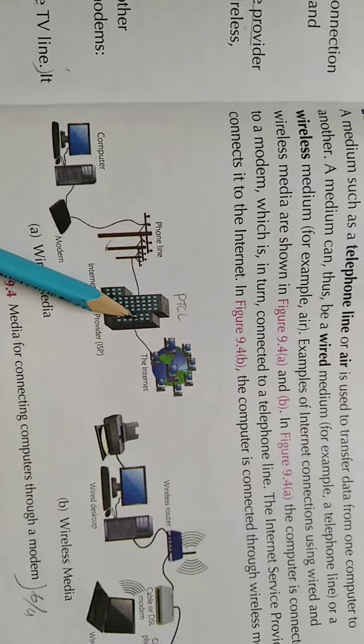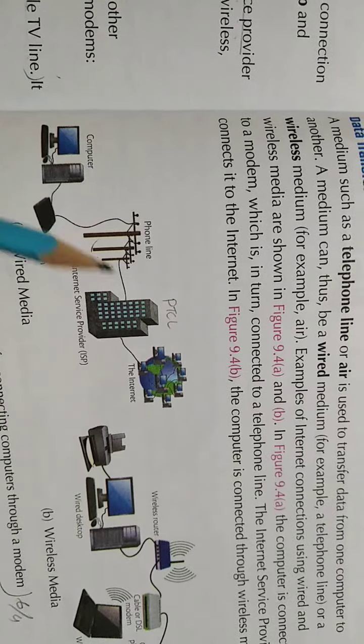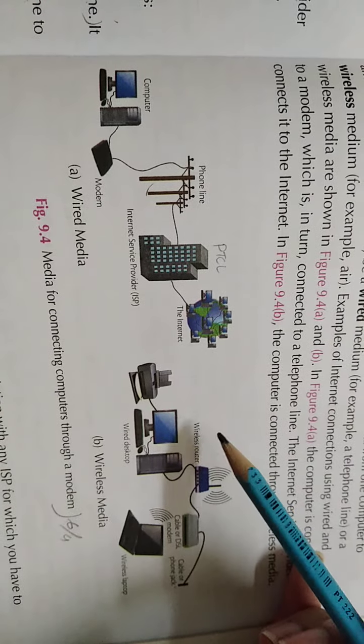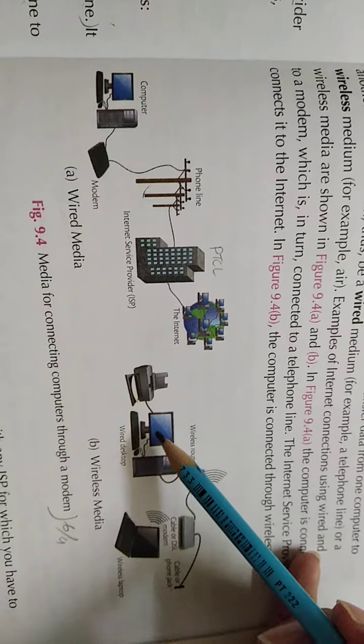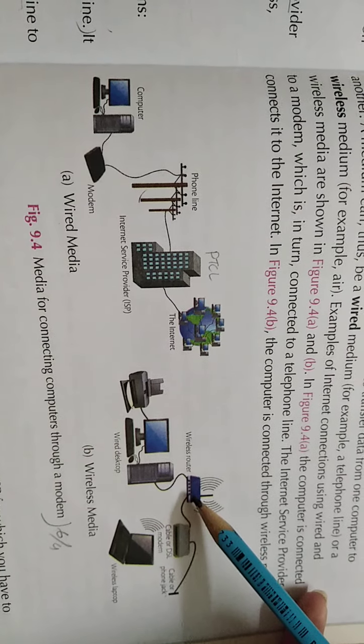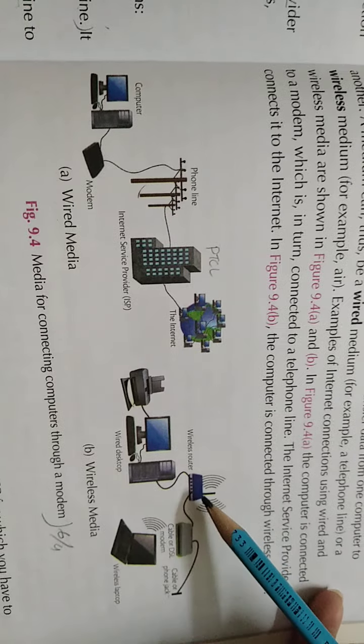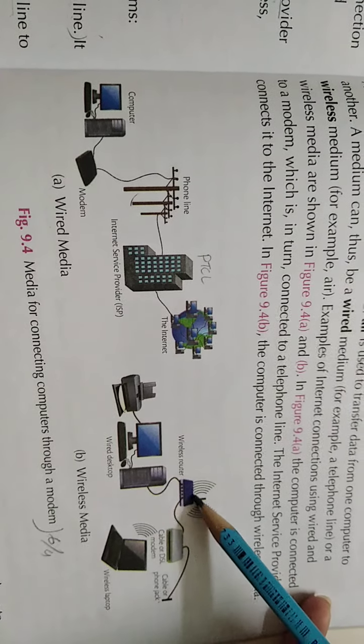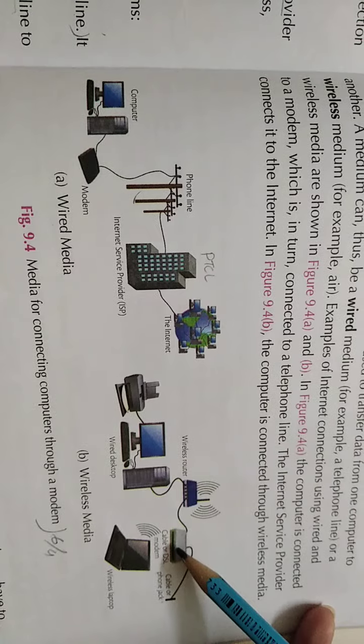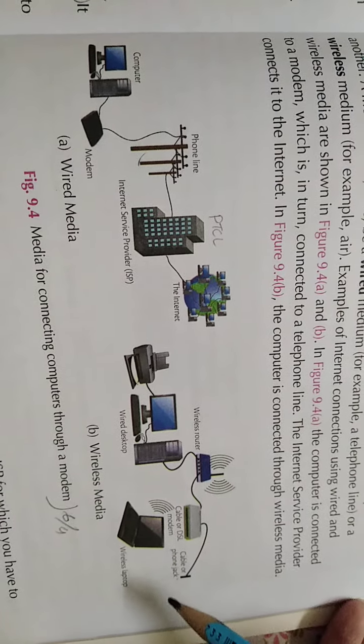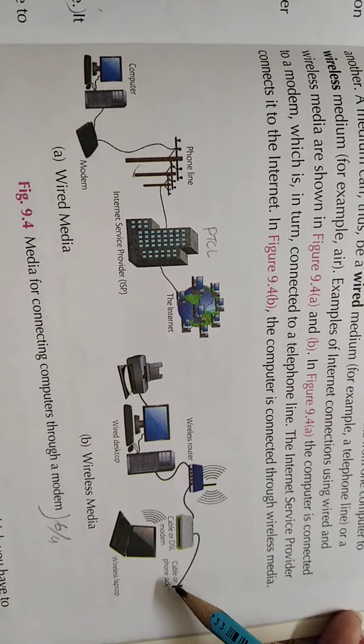If your media is wireless, then it will be like your desktop will be connected to the router, to Wi-Fi, or it can be wired, but you can use the Wi-Fi also. Then it is connected to the DSL modem, and the DSL will be connected to the cable phone jack.